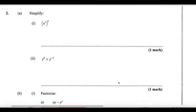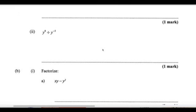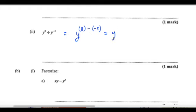Number two, simplify. We're dealing with the laws of indices here. This is x cubed, all in brackets, squared — that means we multiply 3 times 2, giving us x to the power of 6. We have a divide, and divide means to minus. So this will be y to the power of 8 minus negative 5, which is y to the power of 8 plus 5, giving us y to the power of 13.